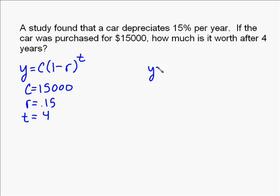And then it tells you that your car is going to depreciate 15%, well that's the same as 0.15. And we're asking what's the case going to be in 4 years, so that's always our time. So we put $15,000 in for C, we put 0.15 in for R, and we put 4 in for t.